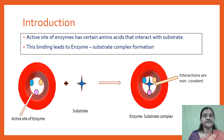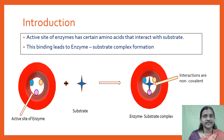Enzymes and substrates specifically bind with each other. Enzymes have active sites which have a unique amino acid sequence that enables the substrate to bind to it. These substrates interact with the amino acids at the active site. The substrate interacts with these specific amino acids at the active site, and finally we get an enzyme-substrate complex. The interactions are non-covalent.